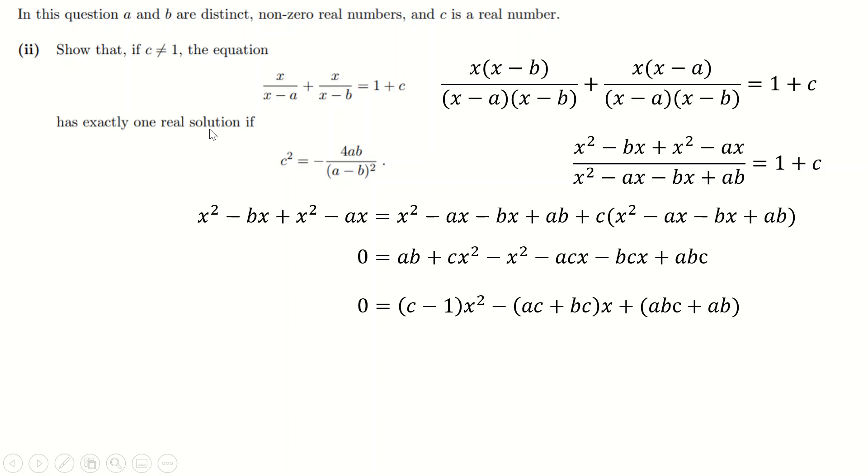Now it says exactly one real solution. As soon as I read that line, I think discriminant. If the discriminant equals zero, that gives me exactly one real solution. I've colored these b's, a's, and c's because it's a bit confusing - these b's, a's, and c's have nothing to do with these b's, a's, and c's. These ones are just referring to the standard quadratic setup of ax² + bx + c, whereas these ones are actually the variables in the question.